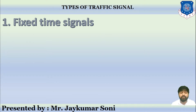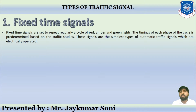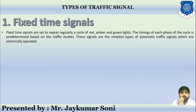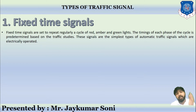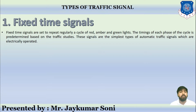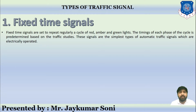Let us learn about the first one — fixed traffic signal. As the name suggests, fixed traffic signals are also called fixed time signals. In this signal, the signals are set to repeat the cycle of red, amber, and green light at a particular fixed period. The timing of each phase of the cycle is predetermined and is based on traffic studies that have already been conducted on the road before providing the signal.